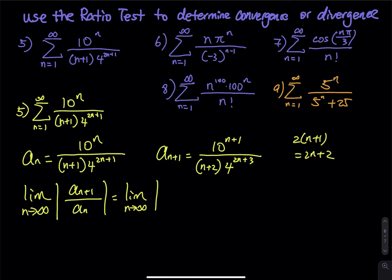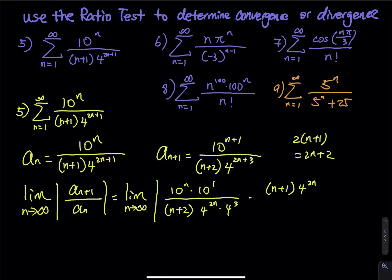That is the limit as n approaches infinity of a_{n+1}. Let's break down the power: that is 10 to the n times 10 to the first, divided by n+2, and then we have 4 to the n times 4 to the third. We divided by a_n, which means we multiply the reciprocal of a_n, so on top we have n+1 and then 4 to the n times 4 to the first.